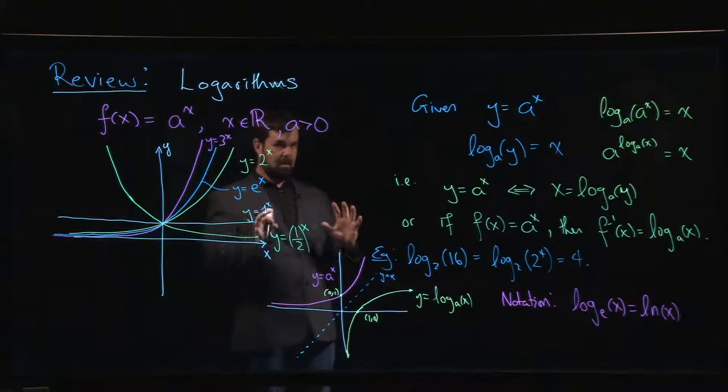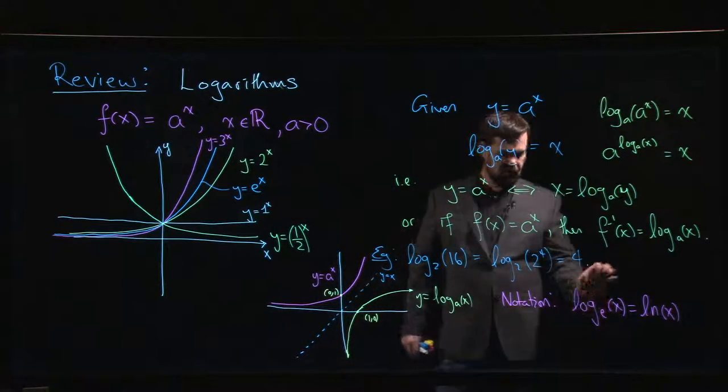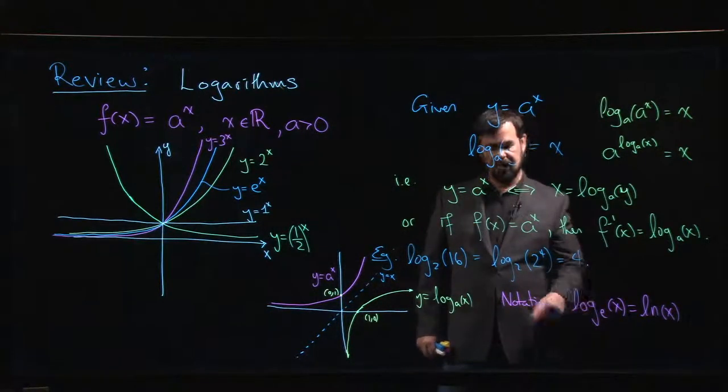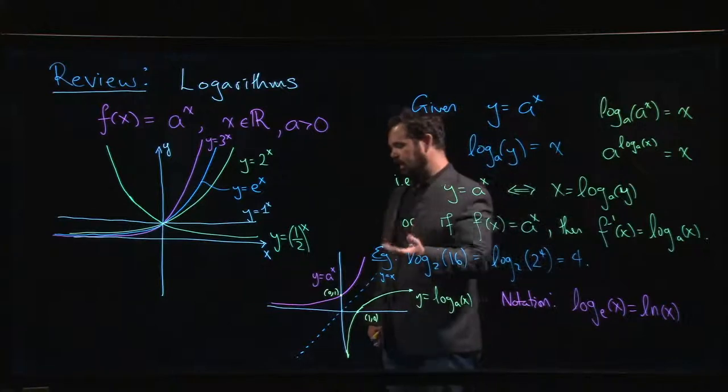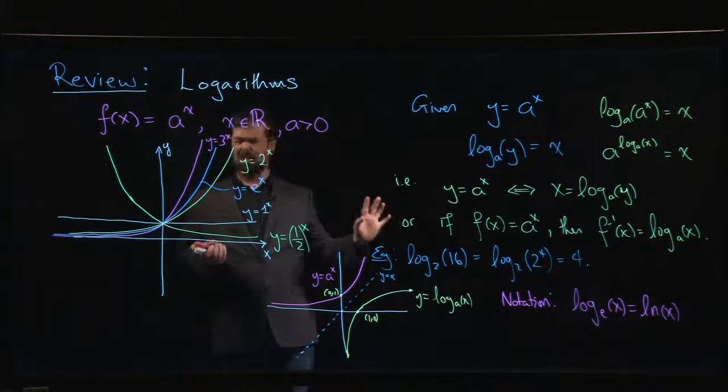In textbooks that are geared towards pure math students, like math majors who aren't planning to do anything in the sciences, sometimes if you see just log with no base indicated, the assumption is that that's the natural log. Because for mathematics, for pure mathematics, base e is really the only base that you care about working in. You don't really care about other bases, so you just stick to base e and so you just write log for the log.